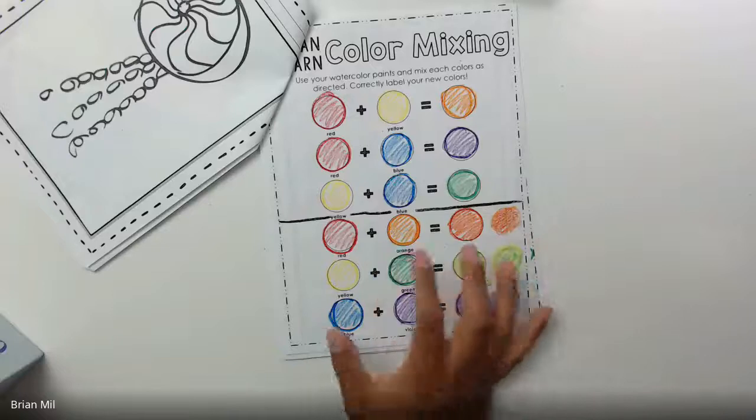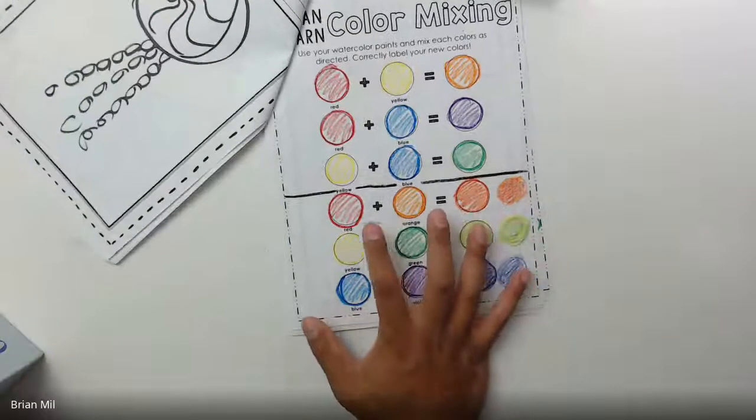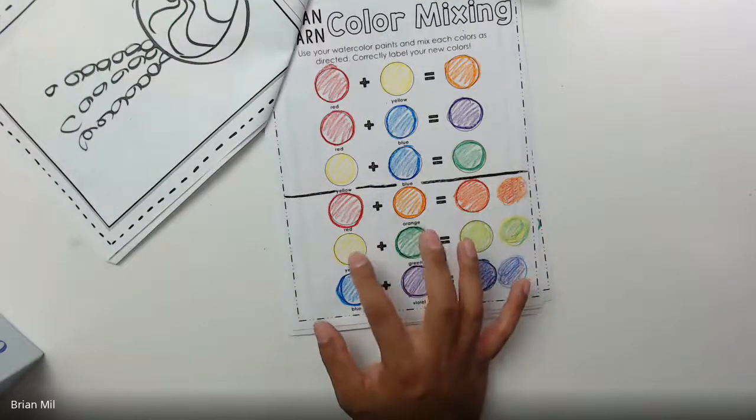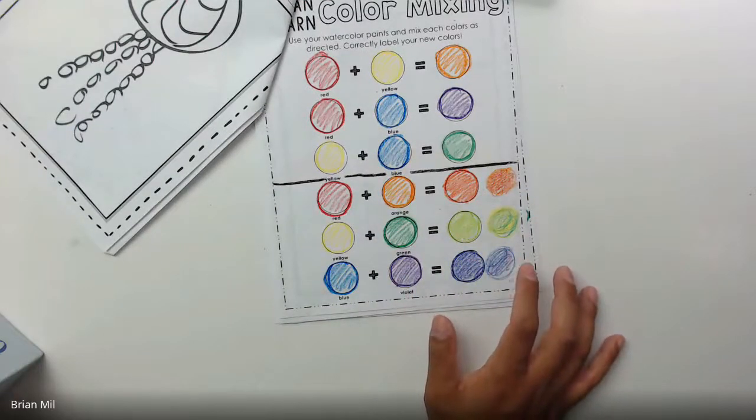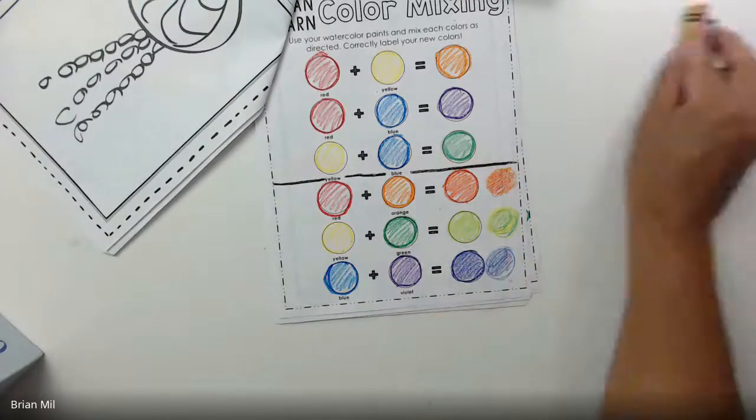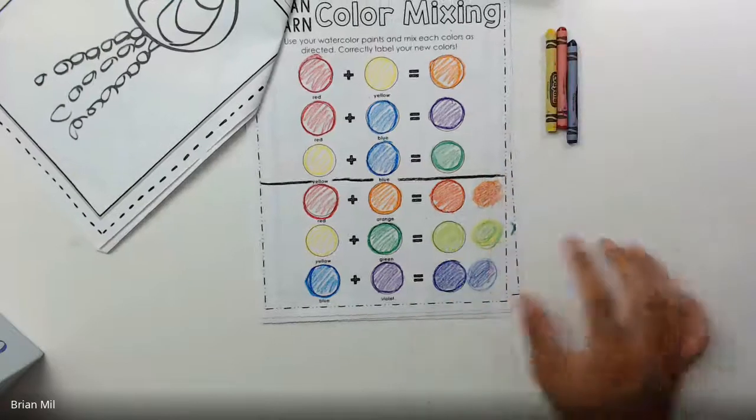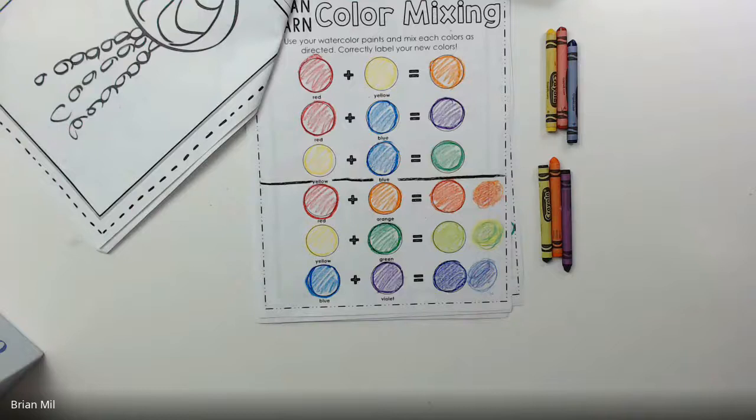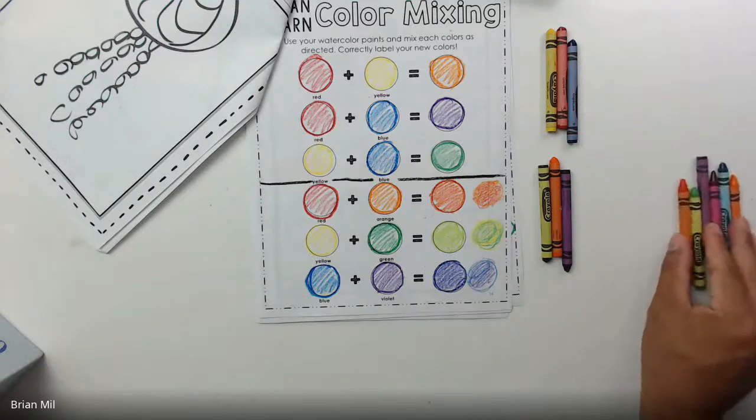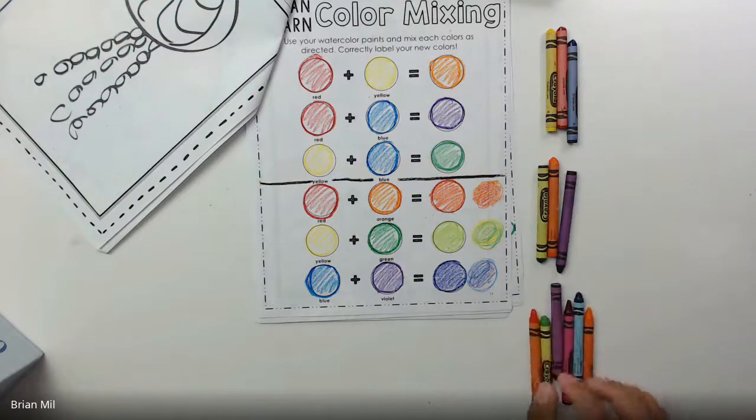And then what we didn't know before from first grade, we didn't know about the tertiary colors. So tertiary colors are basically when you mix secondary colors and primary colors together, and you get a whole other set of colors. So there's about three primary colors, about three secondary colors, and about six tertiary colors.